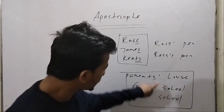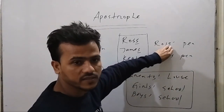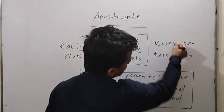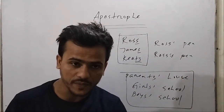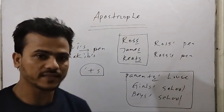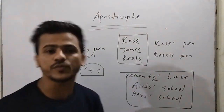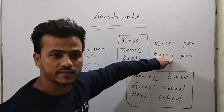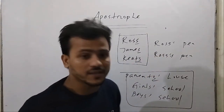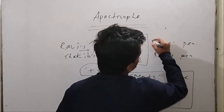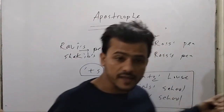For plural nouns ending in S, use only apostrophe. For singular nouns, use apostrophe with S. If you are confused while writing, apostrophe with S is the best way. Use only apostrophe if a noun ends with S.